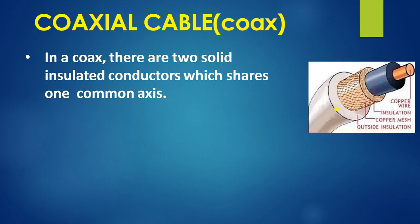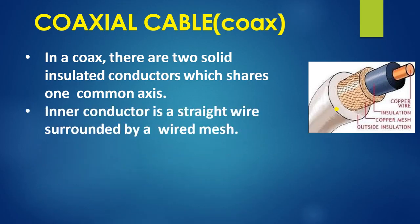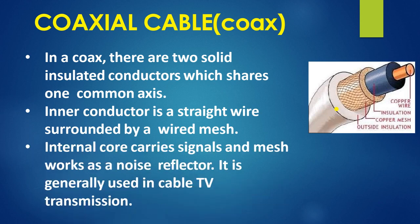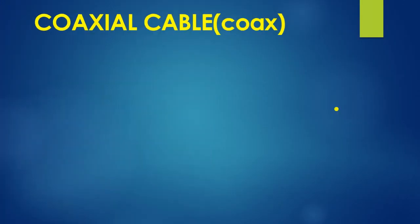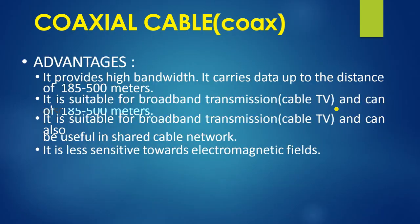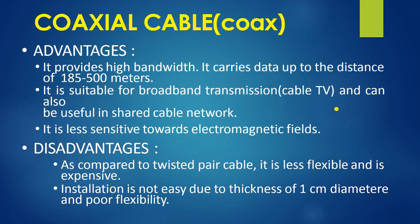Coaxial cable — here is the diagram of a coaxial cable. It is generally used in TV systems connected with cable. Advantages: it has high bandwidth and is suitable for cable TV connections; it is less sensitive to electromagnetic fields. Disadvantages: compared to twisted pair cable, it is less flexible, more expensive, and its installation is not easy due to its thickness of about one centimeter diameter.